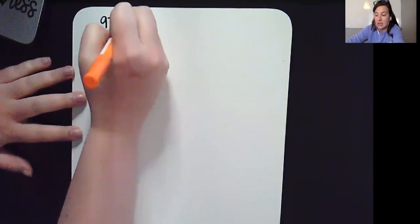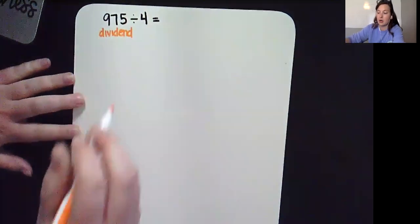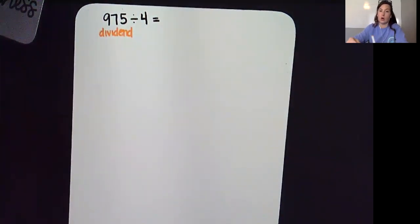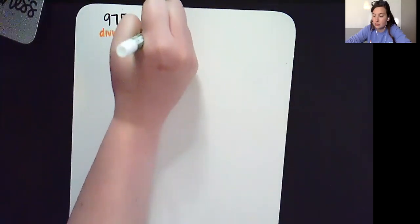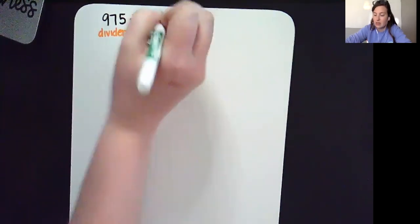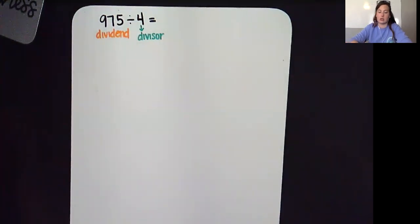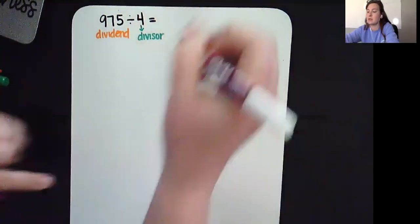975 is my dividend, the number we are breaking apart. 4 is my divisor. And then our answer to the division problem is our quotient.